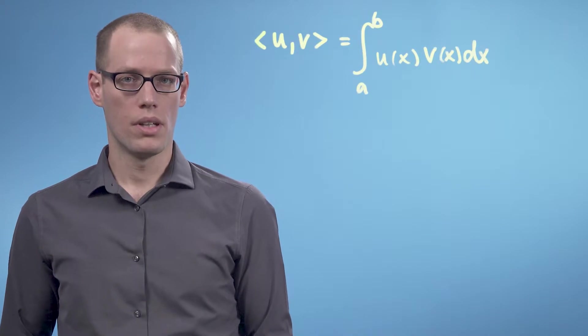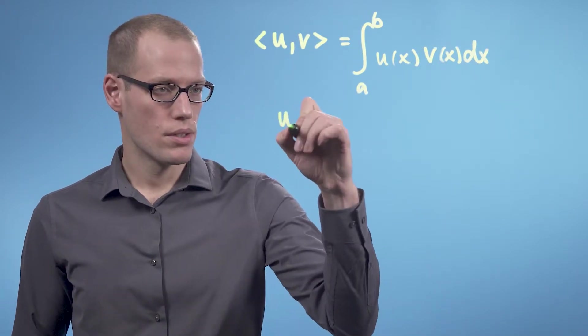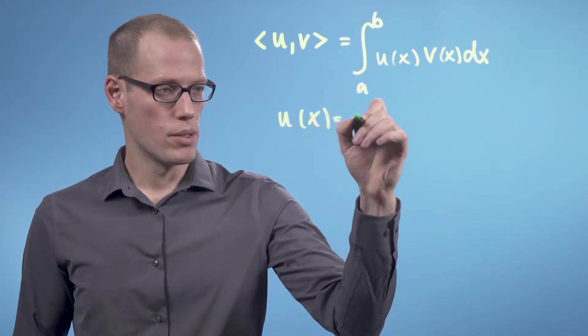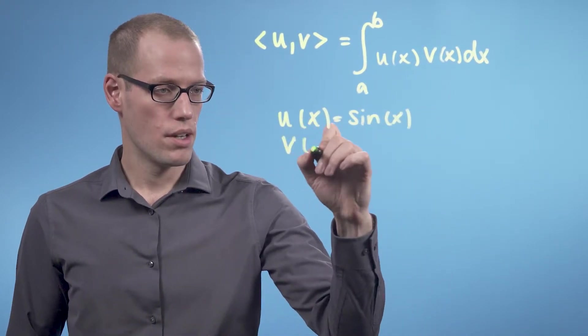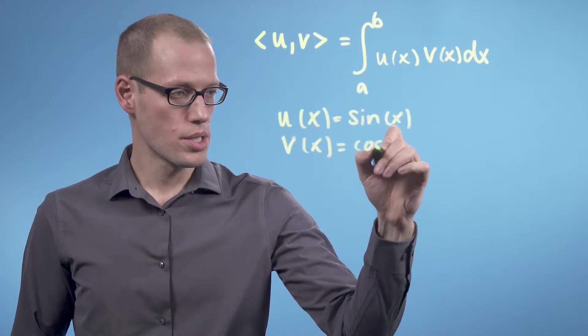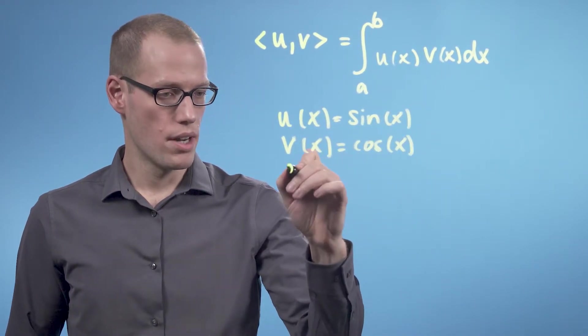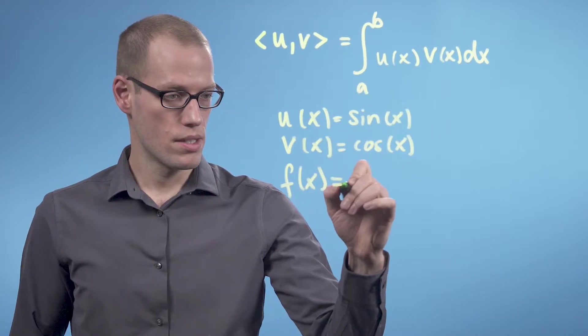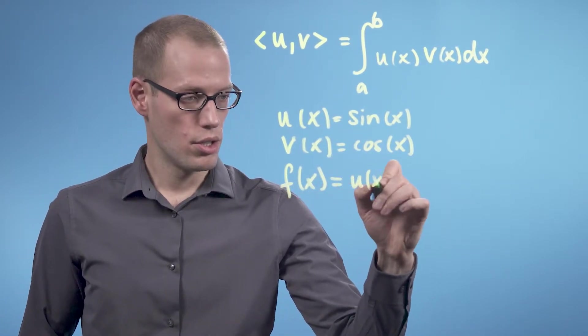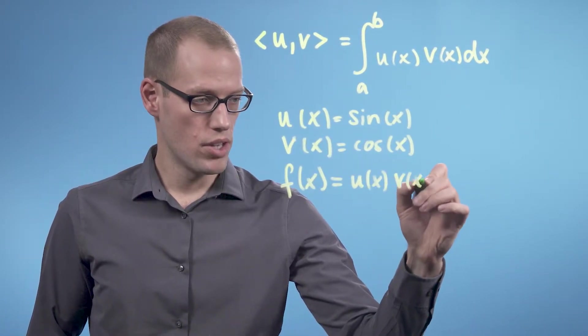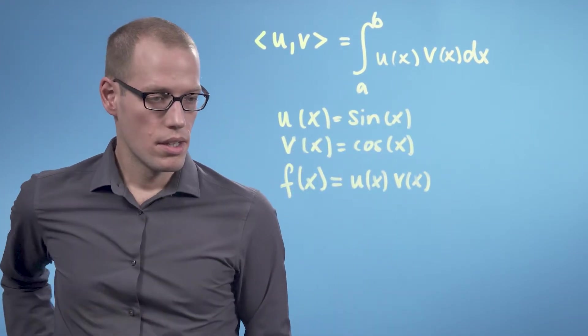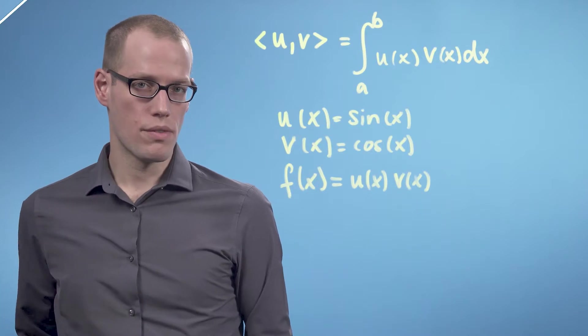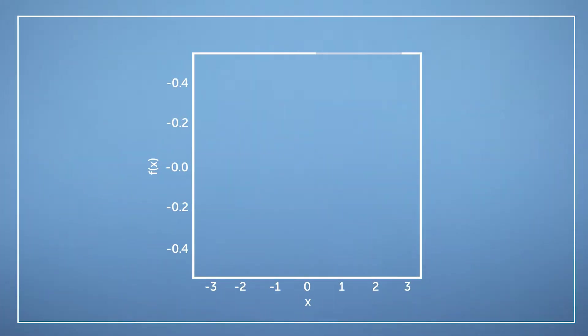Let's have a look at an example. If we choose u(x) equals sine x and v(x) is cosine x, and we define f(x) to be u(x) times v(x), which is sine x times cosine x, then we're going to end up with this function.